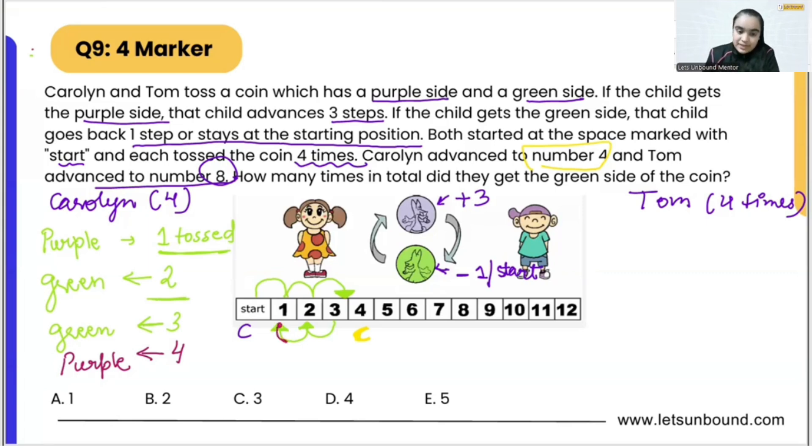So we are done with this. That means Caroline got two green, she got green side two times during the toss.